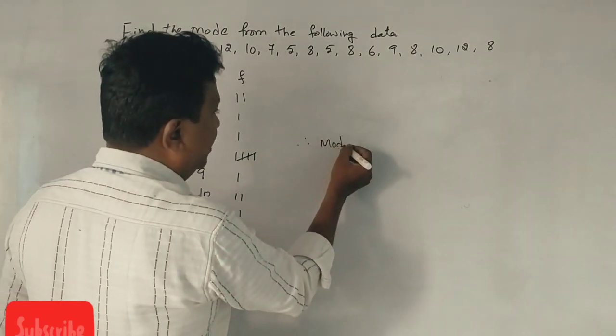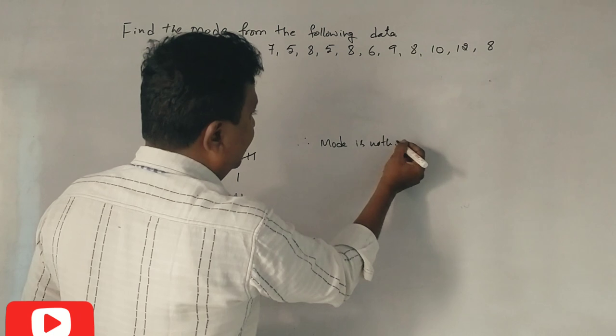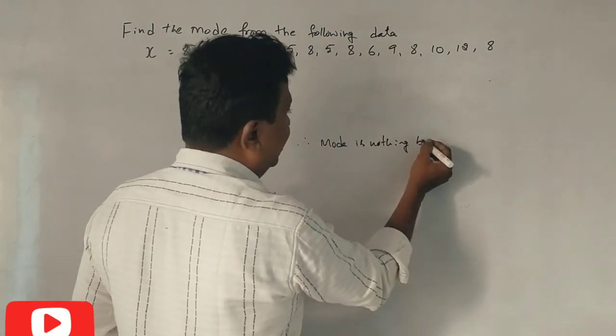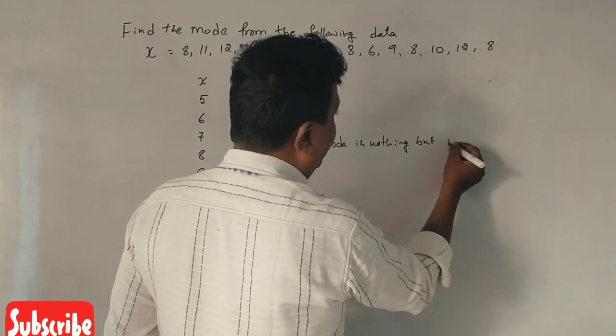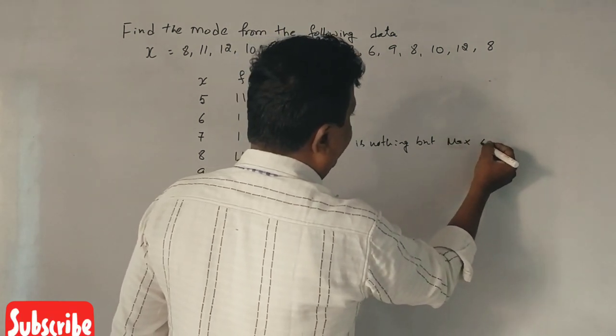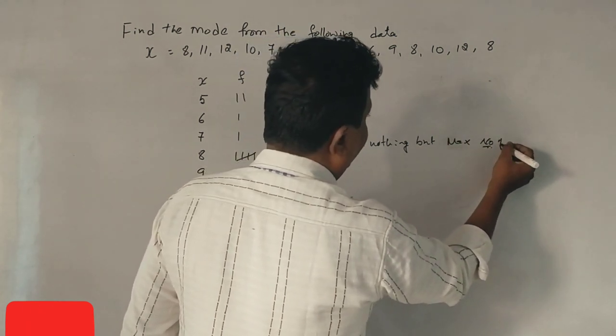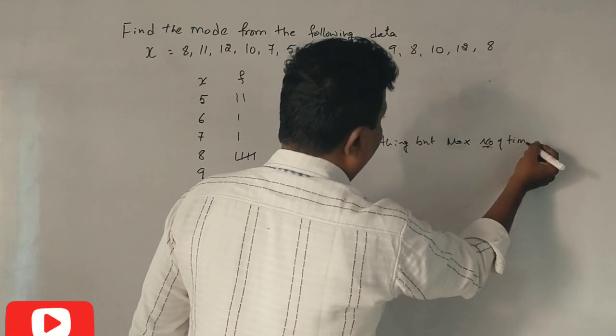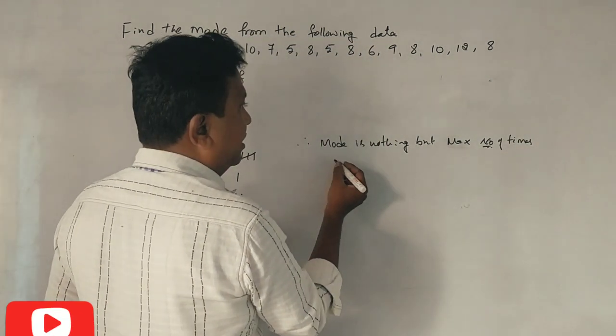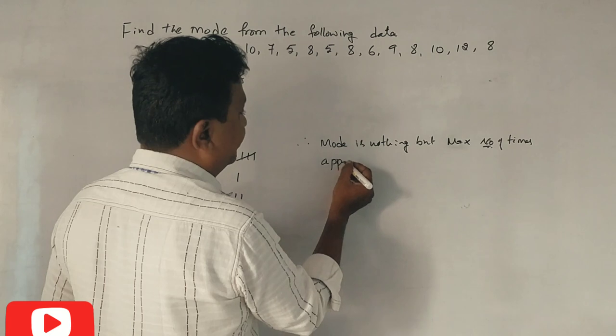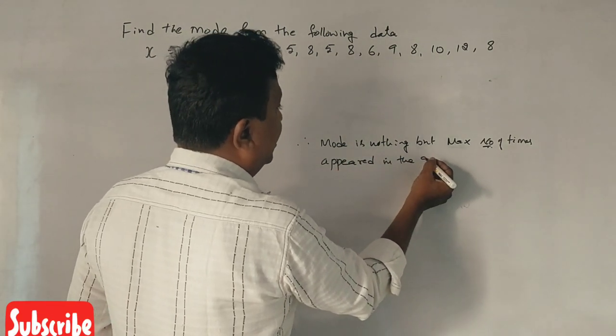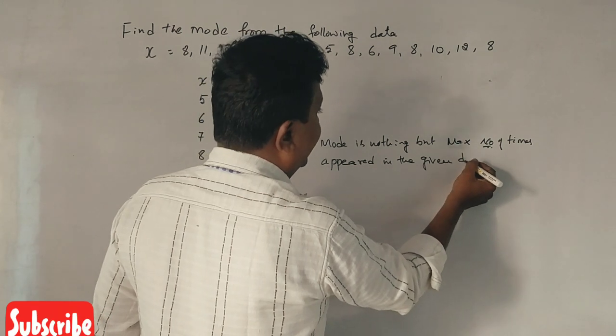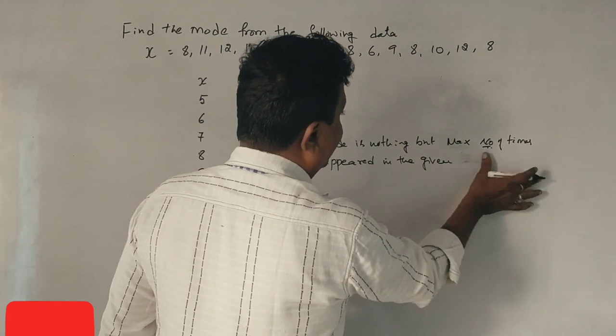Mode is nothing but highest, sorry, maximum number of times. Maximum number of times appear in the given distribution. Correct? In the given observations.